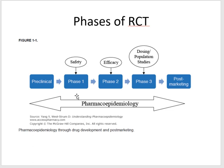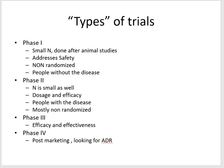At a certain point in this class we'll talk about the difference between efficacy and effectiveness. Phase one has a small sample size, done after animal studies, addresses safety mainly, with no randomization, using healthy volunteers. Phase two focuses on figuring out the dose and efficacy with recruited participants who have the disease, with mostly messy randomization. Phase three is where you look at efficacy and effectiveness with proper randomization — that's your RCT.